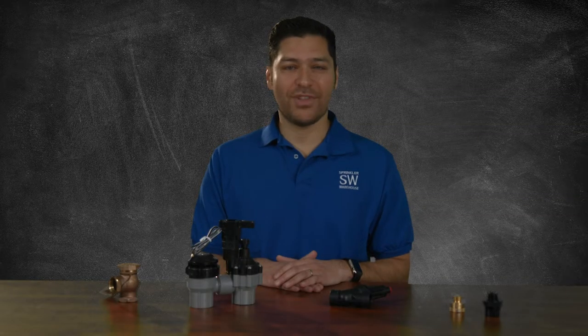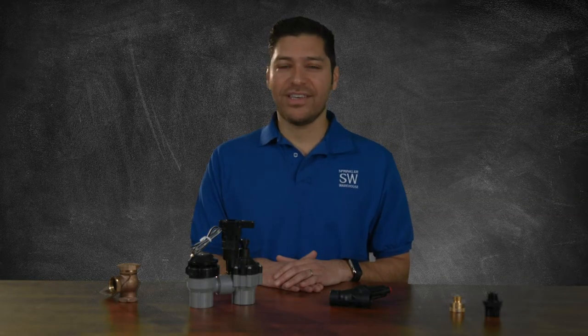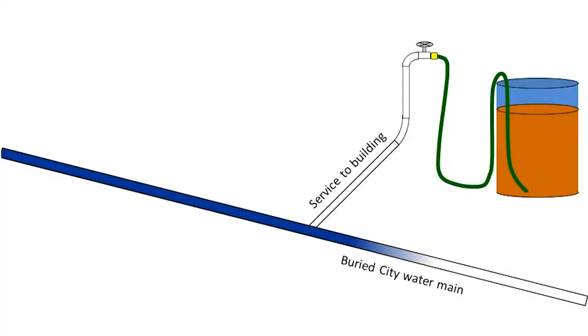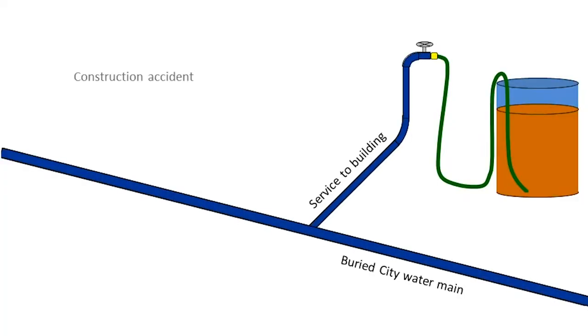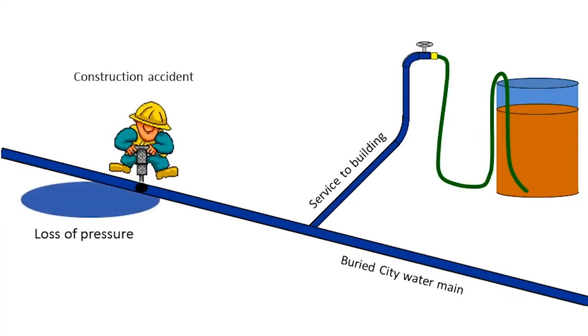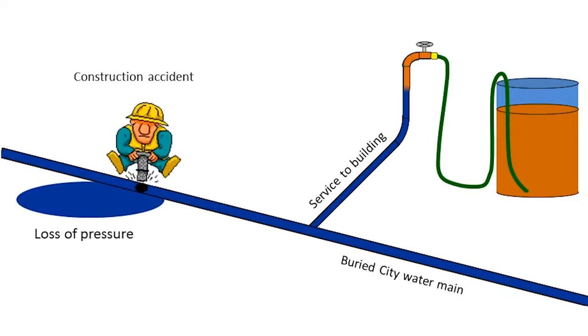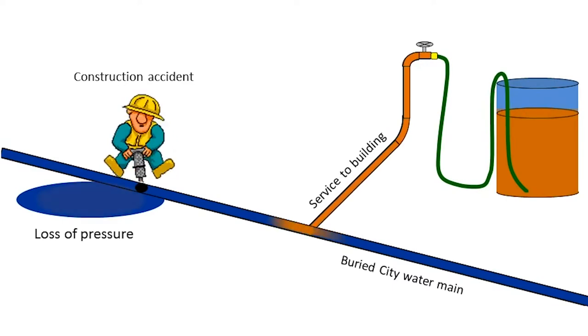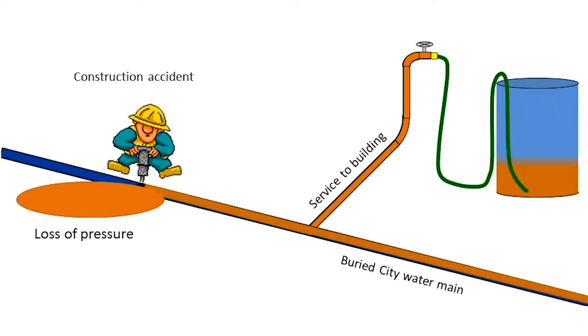There are two primary forms of backflow: back siphonage and back pressure. With back siphonage, the water from the irrigation system is siphoned or sucked into the potable water supply. This can cause loss of pressure.